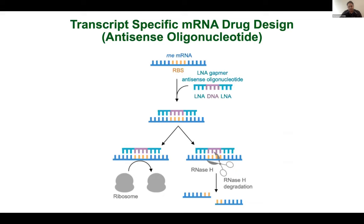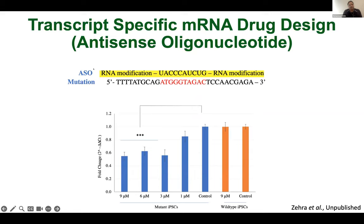Now that we have the idea of which transcripts are expressed in the mutation line versus wild type, we designed a proof-of-concept antisense oligonucleotide to degrade the targeted mRNA. If you have an mRNA of interest, you design an antisense with locked nucleotides flanking both sides with the target DNA in the middle. It will find that particular mRNA, lock in, and the double-stranded helix will signal RNA-H to degrade the mRNA, stopping translation.